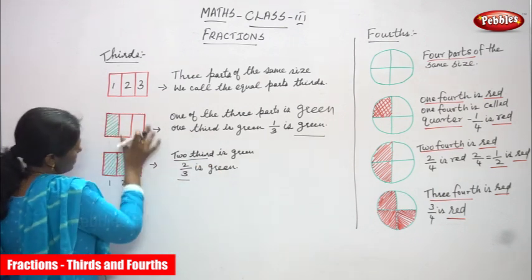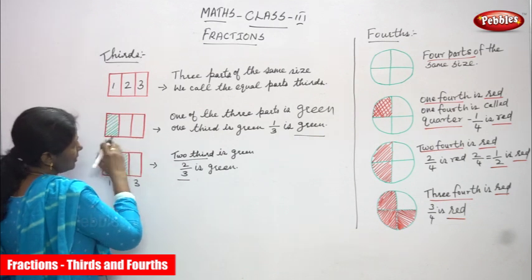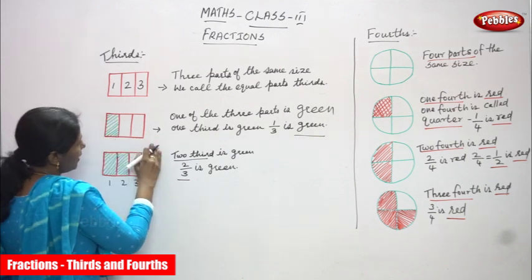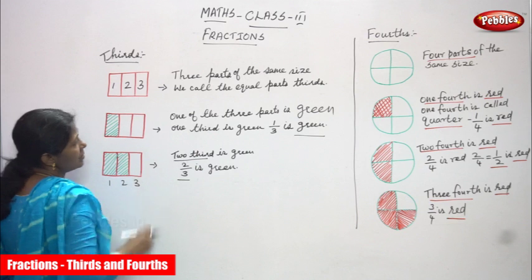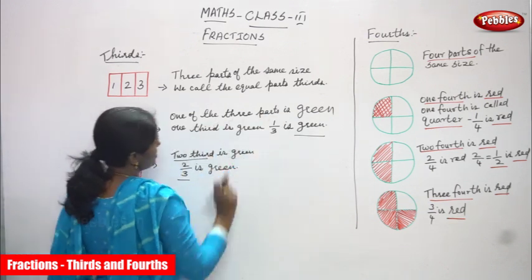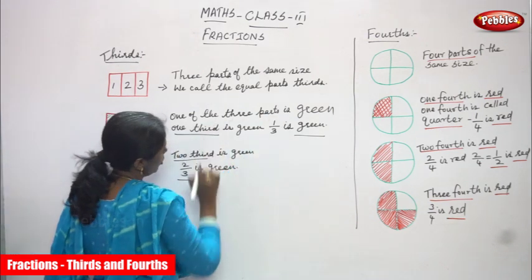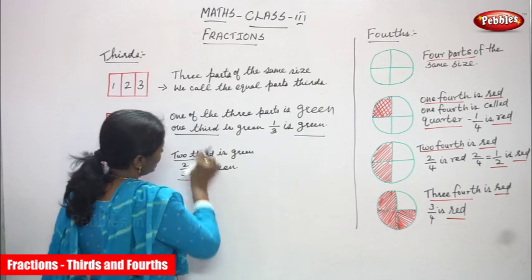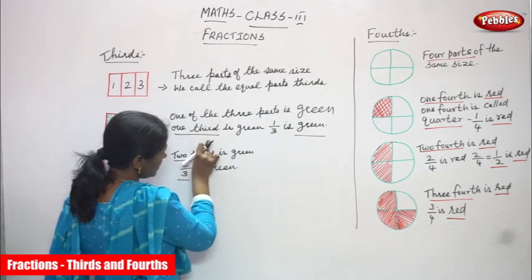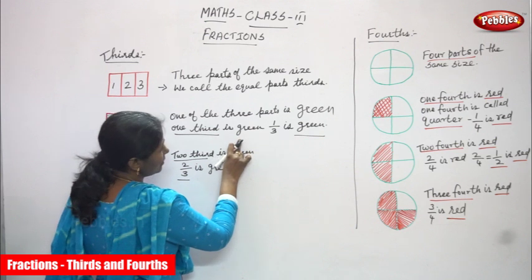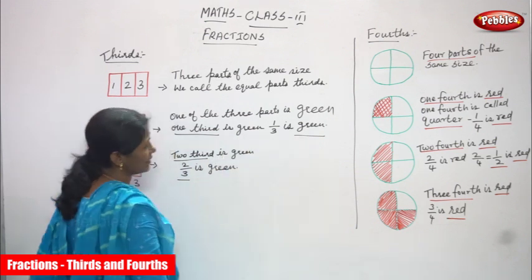So here with the same object, I cut it into three equal parts. Then I shaded only one part in green color. We can call one of the three parts in green as one third. In fraction, one by three is green.